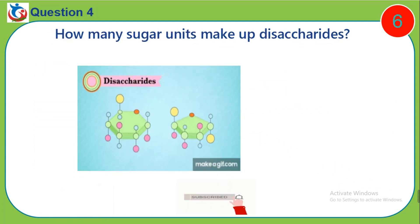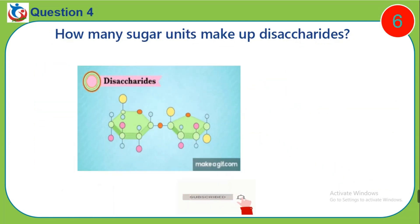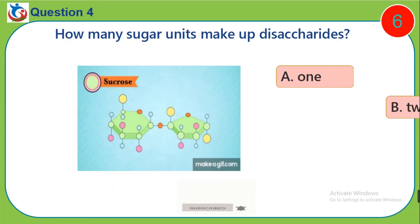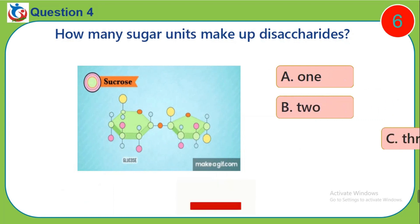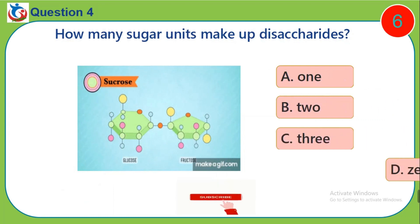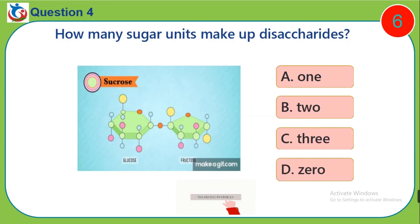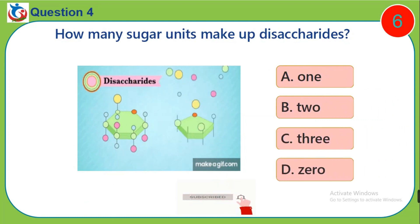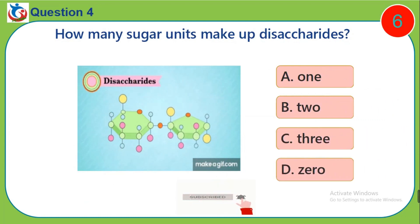Question 4. How many sugar units make up disaccharides? A. 1. B. 2. C. 3. D. 0.